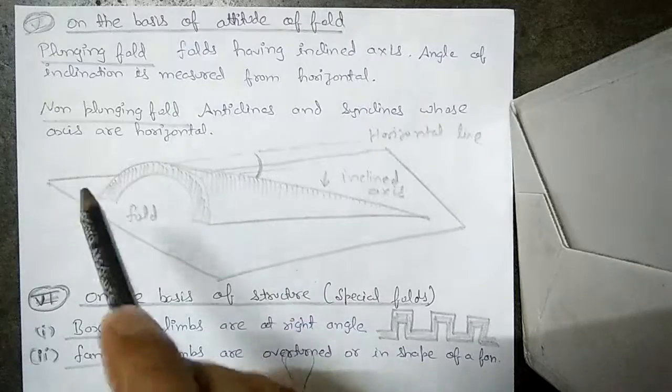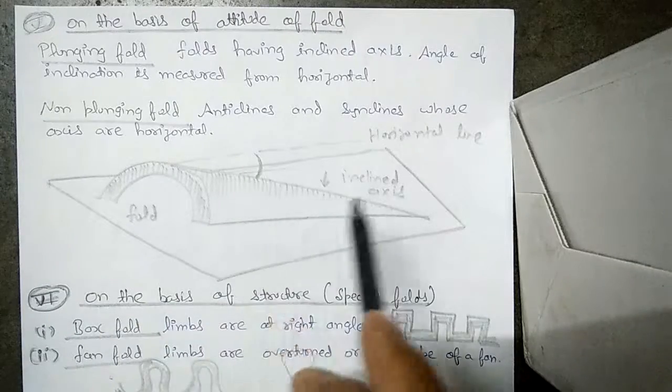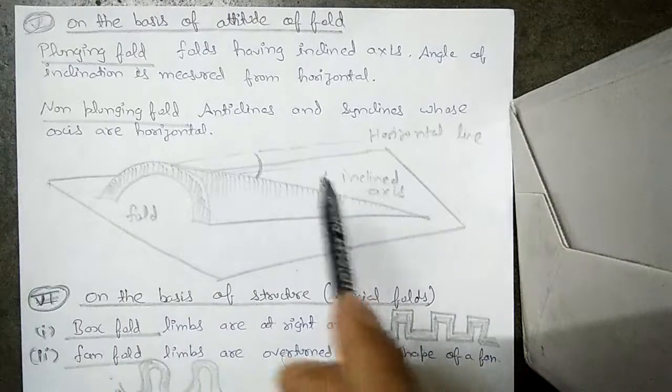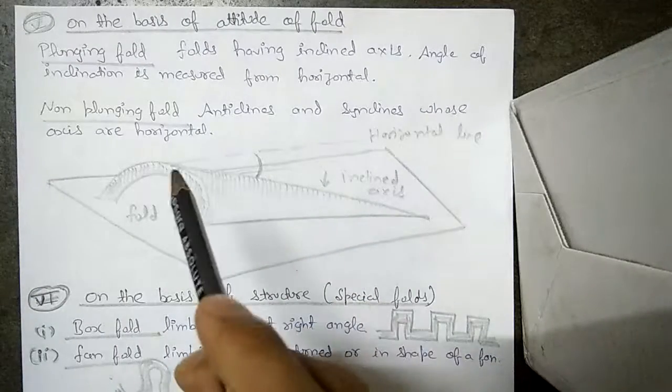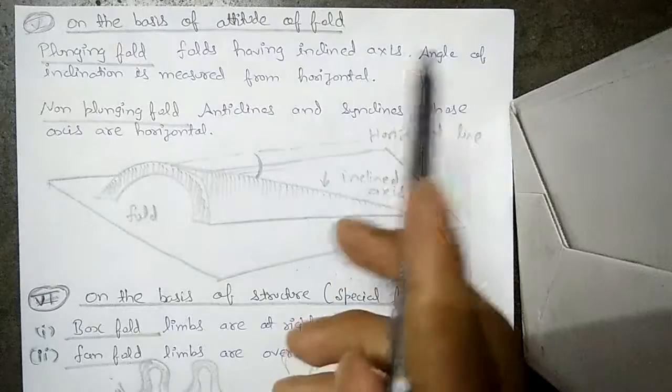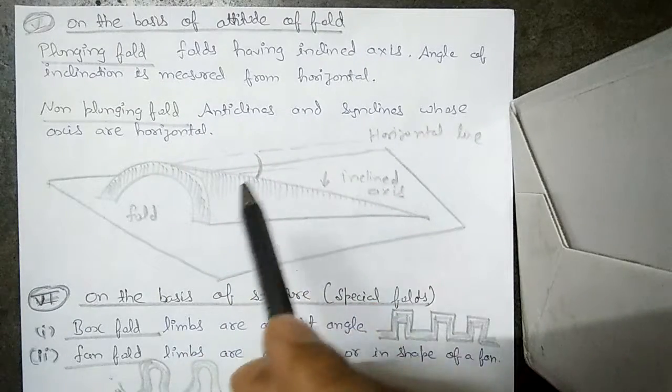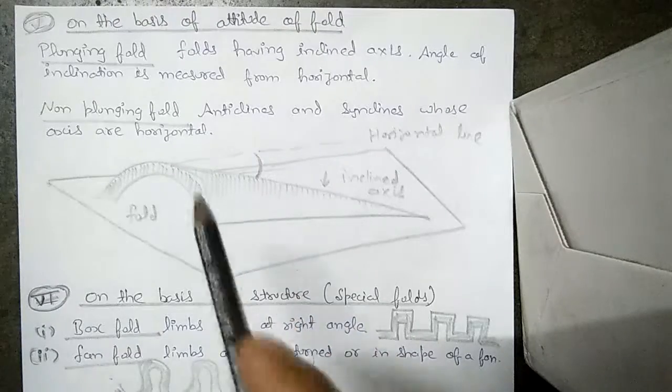So this is the fold, it is like a half cut cone kept on a horizontal surface. This is that fold and this is its inclined axis. Its angle of inclination is measured from horizontal. I have made a horizontal line and from that its angle of inclination is measured.